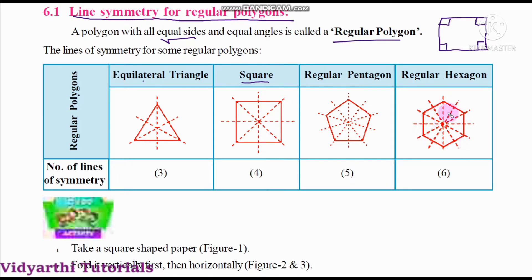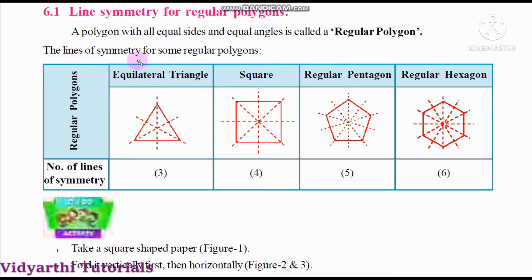So any regular polygon has all equal sides and all equal angles. Now we are going to see how to draw lines of symmetry for these regular polygons. The lines of symmetry for some regular polygons — here we have some regular polygons, let us see how lines of symmetry are drawn for them.